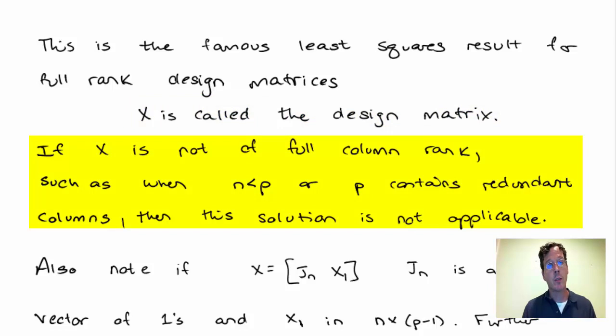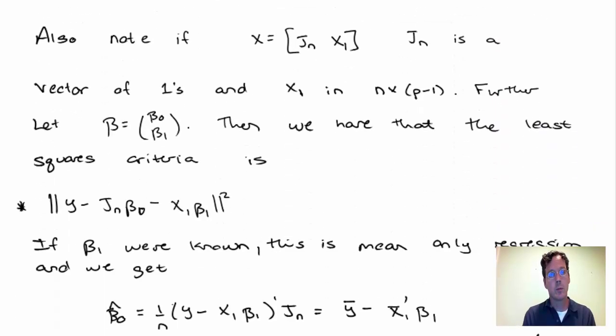If x is not full rank, then the solution I have is not applicable because x transpose x is not invertible. This can happen when n is larger than p or p contains redundant columns. Let me now relate this result back to the linear regression result that showed that the solution to the slope was the covariance between y and x divided by the variance. Let's give the analog of that in this matrix sense.